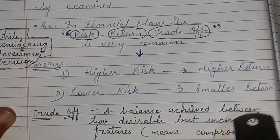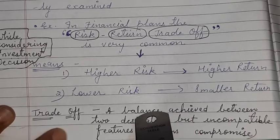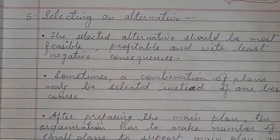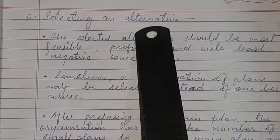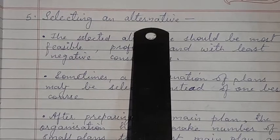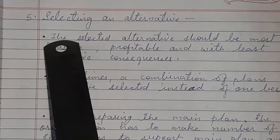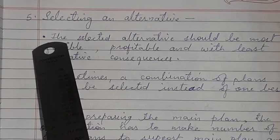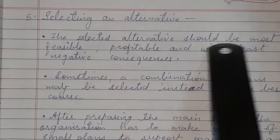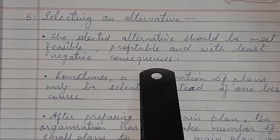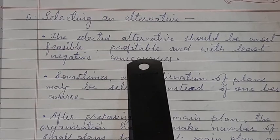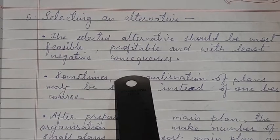After evaluating, comes selecting an alternative. Someone has to be selected — you have to move forward on some path. You may have many options like going into banking, becoming a CA, lawyer, or accountant, but you have to choose one. The selected alternative should be the most feasible, profitable, and with the least negative consequences.